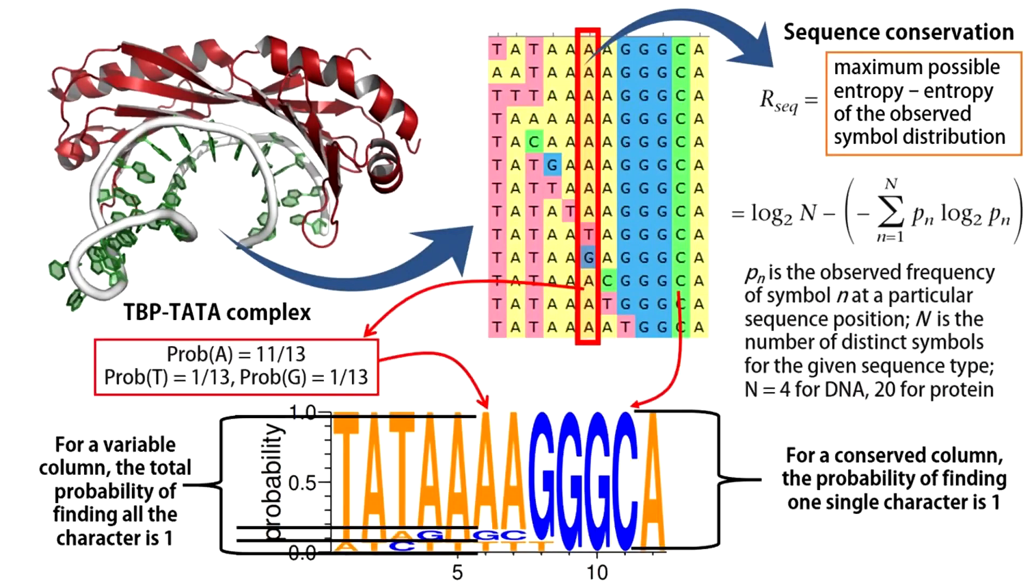Now let us see another column. Here there are A, T and G, but no gaps. So the total probability of finding them all is 1 obviously. But what is the probability of finding A? It's 11 divided by 13. Similarly, the probability of finding T and G are both 1 by 13. So in this case, we are going to write the three characters in a way that together they span the full range of 0 to 1 and individually span the heights equal to their probabilities of occurrences in that given column.